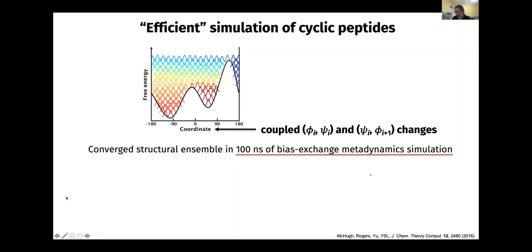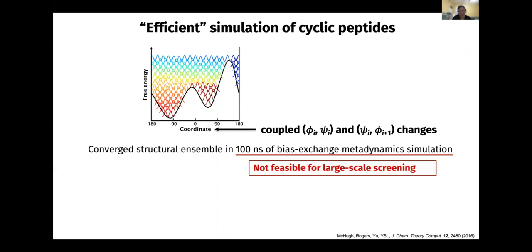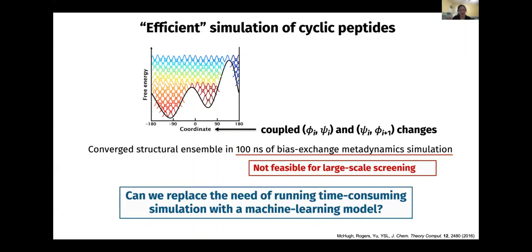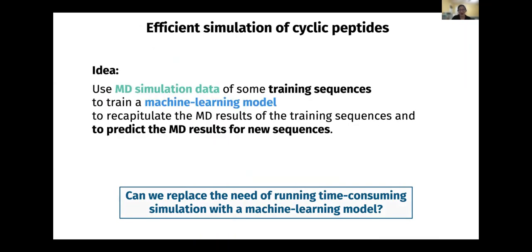It is very rare for a pharma company to use simulation as a predictive tool — they usually use it to explain something they couldn't figure out in experiment. This is not feasible for large-scale screening. So how can we replace the need for these time-consuming simulations with a machine learning model? The idea is to run simulations for, for example, 700 training sequences, get results, and then train a machine learning model to recapitulate those results.